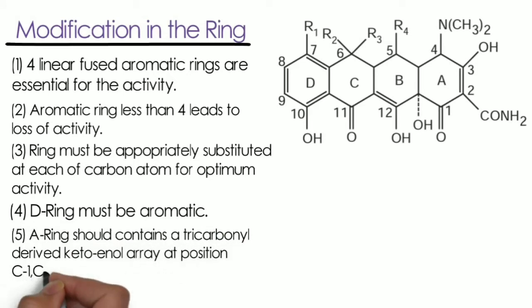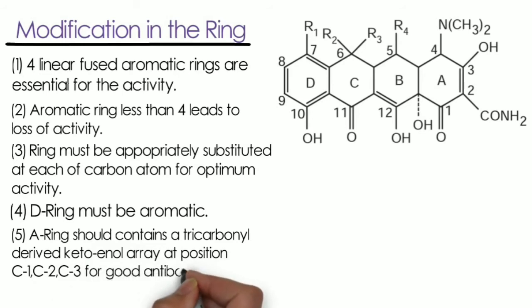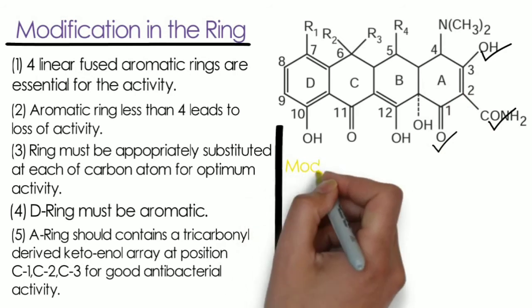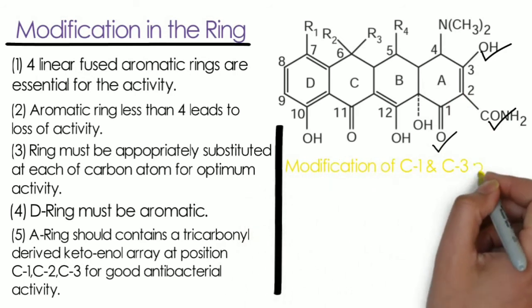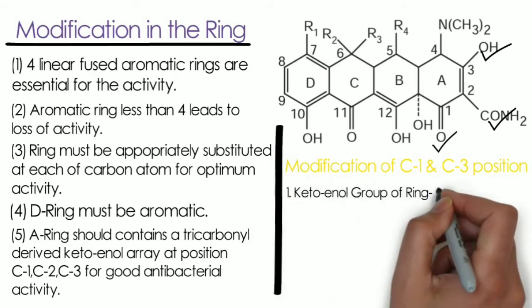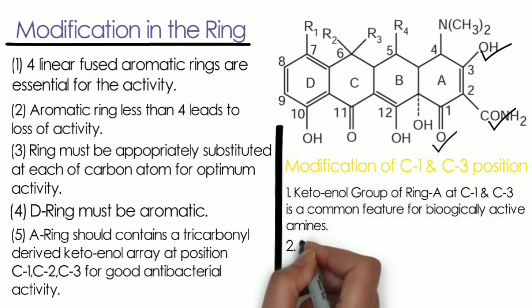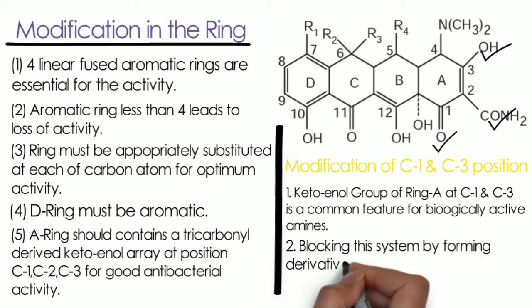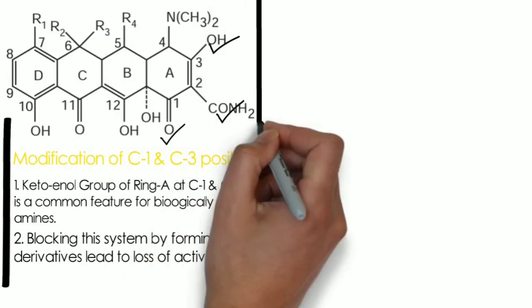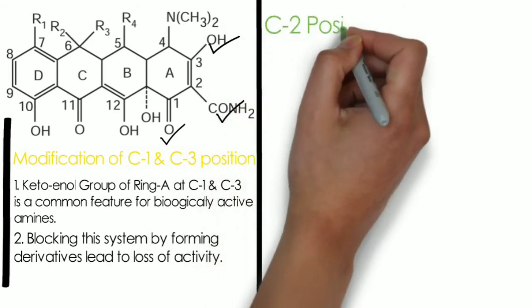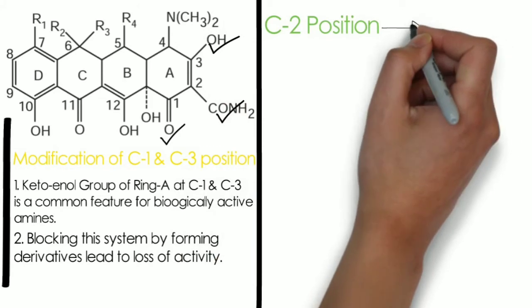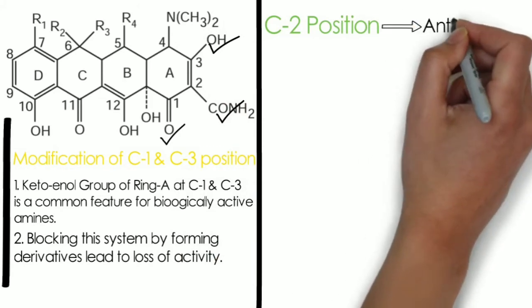The fifth point is that the A ring should contain a tricarbonyl-derived keto-enol group at positions C1, C2, and C3 for good antibacterial activity. In the diagram, the first group is the keto group, the second is the carboxamide group, and the third is the hydroxyl group at position 3 — all are essential for good antibacterial activity. The keto group at position 1 and the hydroxyl group at position 3 are common features of biologically active tetracyclines; blocking this system by forming derivatives leads to loss of activity.